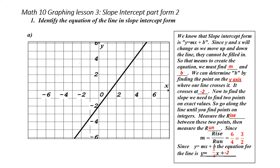Graphing slope-intercept form, part two. Identify the equation of the line in slope-intercept form. When I look at this line, I need to find the equation of the line in slope-intercept form, which is y equals mx plus b.